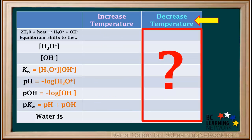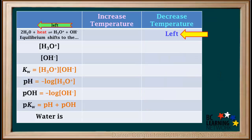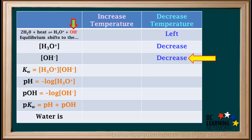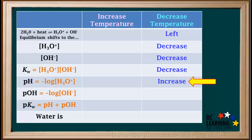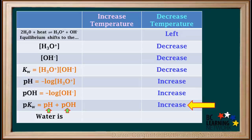Now, without looking at the answers for increasing the temperature, pause the video and fill in the column for decreasing the temperature on your own. Be able to justify each of your answers, then resume the video and check your answers. Because the ionization is endothermic, a decrease in temperature would cause a shift to the left. A shift to the left would cause the hydronium and hydroxide concentrations to decrease. Because both decrease, their product Kw will also decrease. Because the hydronium concentration decreases, the pH will increase; and because the hydroxide concentration decreases, the pOH will increase. Because pH and pOH both increase, their sum pKw will also increase. Remember that changing the temperature never makes pure water acidic or basic — it always remains neutral.